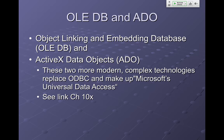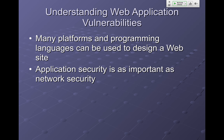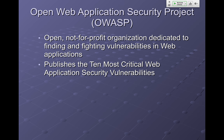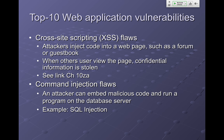You can use many different platforms and programming languages, and application security is very important. If people can control your web server, they can deface the website, steal company data, take over user accounts, and use your machine as the source of attacks on other people. OWASP is the organization that analyzes these vulnerabilities — it's an open-source volunteer organization. Almost everybody in the game is in OWASP. All the companies send people to it — Microsoft, Apache, and all the open-source groups. They publish a lot of papers and source code for products you can run, and they have the top ten web application vulnerabilities.